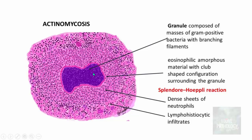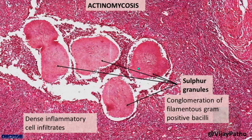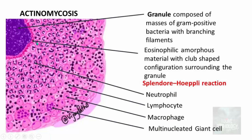This is an illustrated image showing actinomycosis. The central sulphur granule on microscopy is composed of masses of gram-positive bacteria with branching filaments. At the periphery there is eosinophilic amorphous club-shaped material surrounding the granule — that is the Splendore-Hoeppli reaction. These granules are seen in the midst of dense suppurative inflammation, so all the cells surrounding the granule are neutrophils. In chronic stages you also find lymphohistiocytic infiltrate and sometimes even multinucleated giant cells.